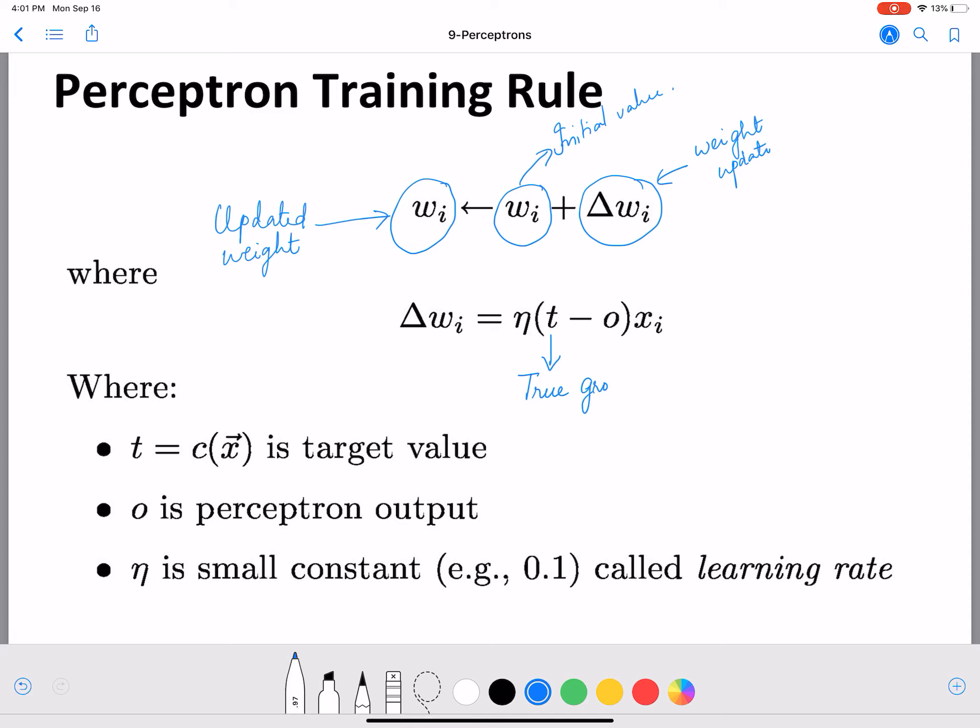x_i is the feature corresponding to w_i. We are examining the difference between t and o—t is the true value and o is the predicted output. We're examining the difference and using that to calculate Δw_i. Now there's one more quantity here which we haven't defined, which is η.